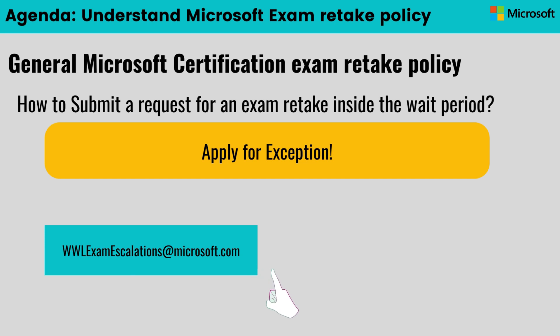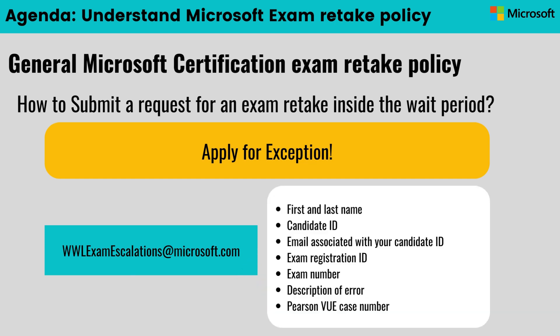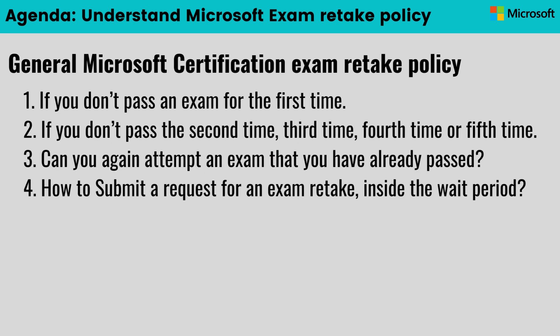To apply for an exception, you need to submit a request to wwl.exam.escalations@microsoft.com. Your request must include: first name and last name, candidate ID, email associated with your candidate ID, exam registration ID, exam number, description of the error, and the Pearson VUE case number. It is very important to note that if any of this information is missing, the exam retake exception request will be rejected.